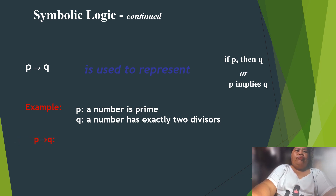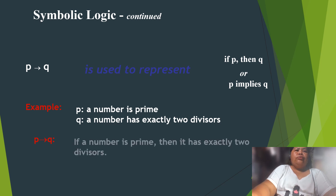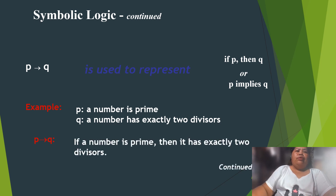So for P then Q: if a number is prime, then it has exactly two divisors.